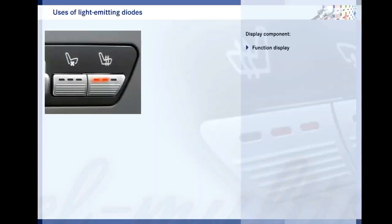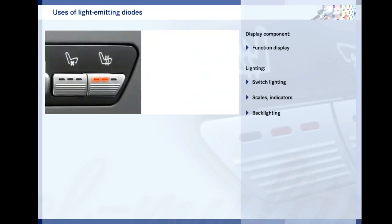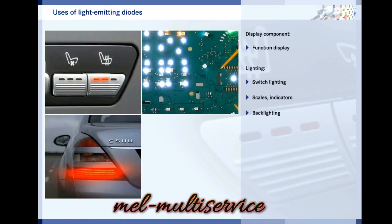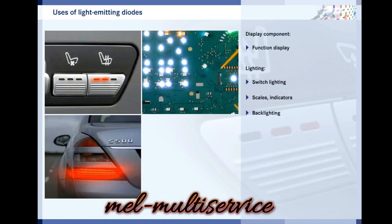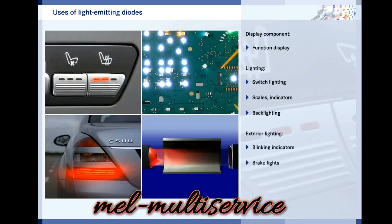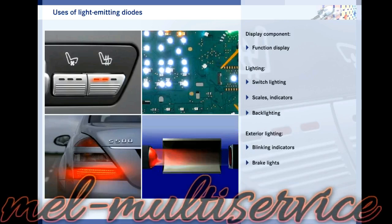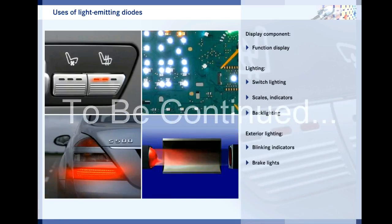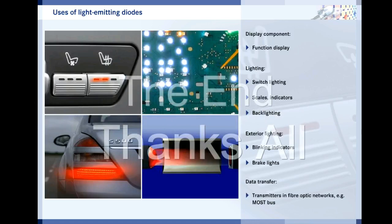LEDs are used as indicator components, for example as a function display for switches. They are also used to illuminate switch symbols, scales, indicators and the dashboard display. Most recently, LEDs have been used for indicator and brake lights, where arrays of super bright LEDs are employed. LEDs can be switched on and off extremely quickly — several million times per second — unlike light bulbs which produce afterglow. This means they can be used as transmitters for data transfer via fibre optic networks, for example in a MOST bus.